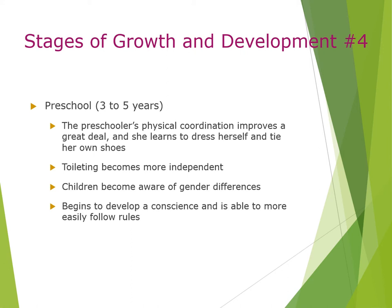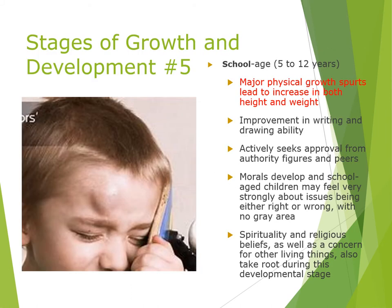During the preschool stage (three to five years), physical coordination improves greatly. Children learn to dress themselves, tie their shoes, and become more independent with toileting. They become aware of gender differences, begin to develop a conscience, and follow rules more easily. During the school-age stage (five to twelve years), major physical growth spurts increase height and weight, writing and drawing ability improves, and children actively seek approval from authority figures. Morals develop strongly — right or wrong with no gray area — and spirituality, religious beliefs, and concern for living things take root.